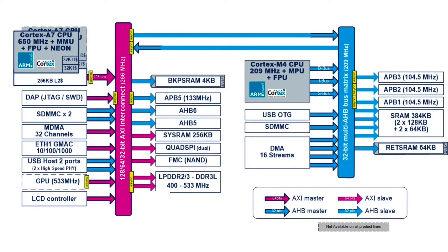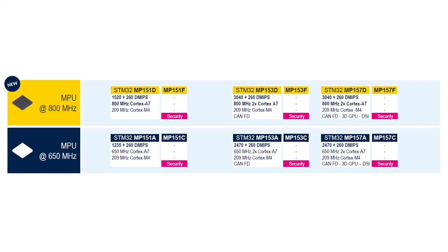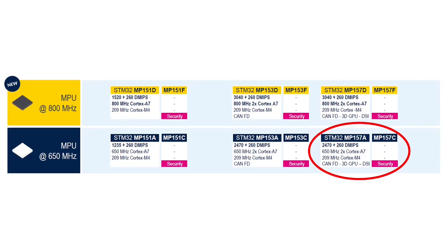As both AXI and AHB are part of the Advanced Microcontroller Bus Architecture spec, they play well together, allowing both A7s and the M4 to use any peripheral. There is a family of devices with different speeds and features. The DK1 uses a 157A, while the DK2 uses a 157C. The main difference between the two devices is whether security features like crypto and hashing are enabled or not.